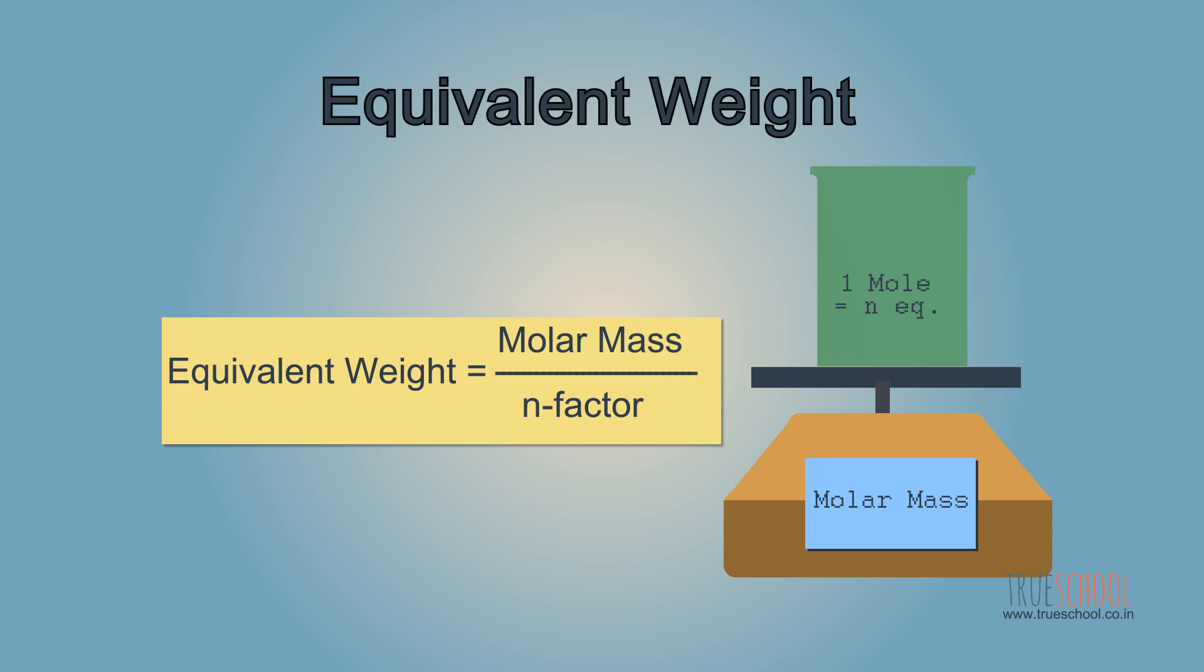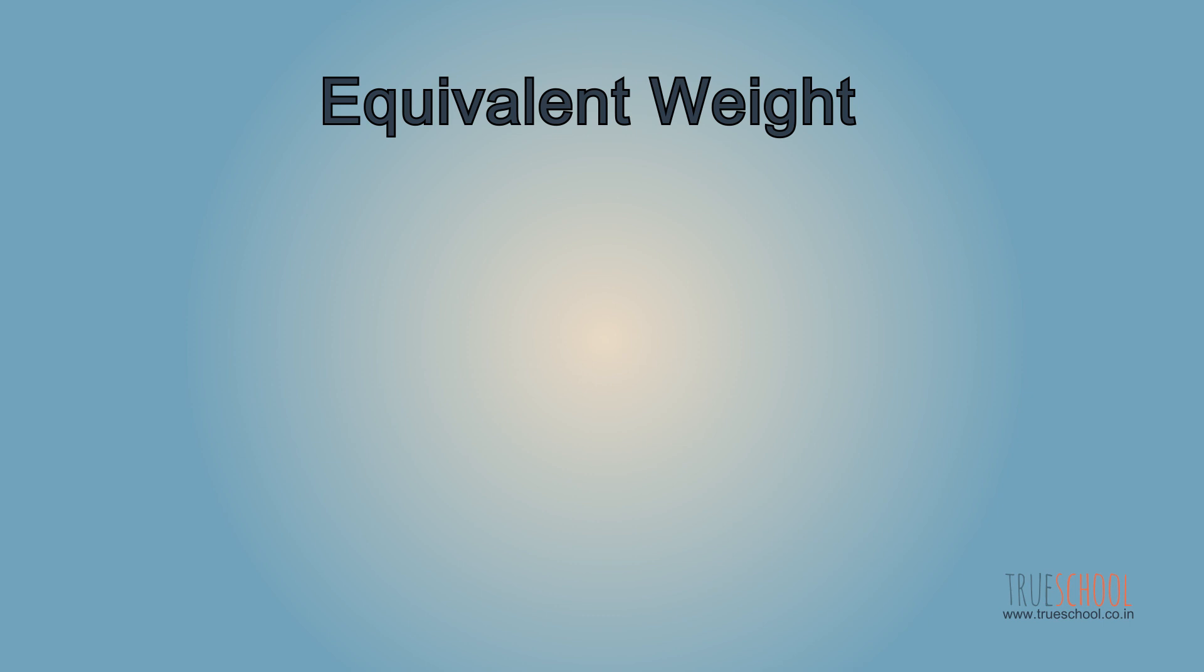If we have x equivalents, its weight would be x into molar mass divided by n factor of the substance. For example, equivalent weight of Ca is its molar mass divided by its n factor, that is 40 divided by 2. Hence, its equivalent weight is 20 grams.